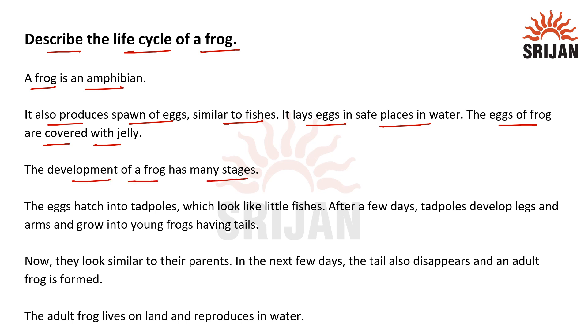First, the eggs hatch into tadpoles, which look like little fishes. After a few days, tadpoles develop legs and arms and grow into young frogs having tails.